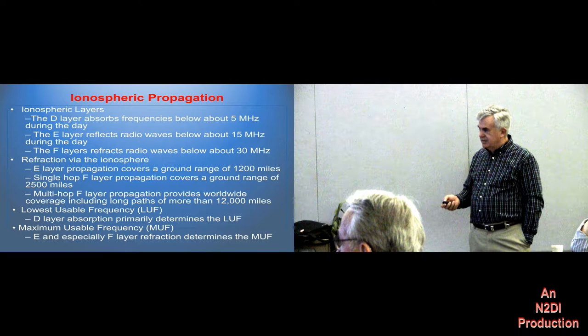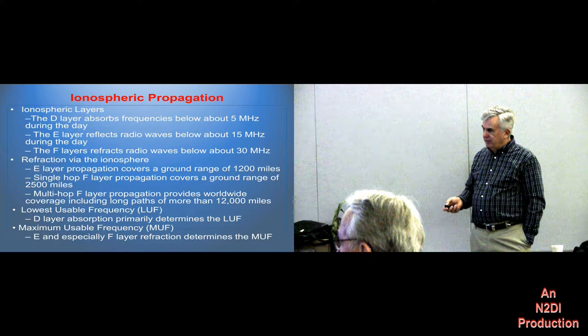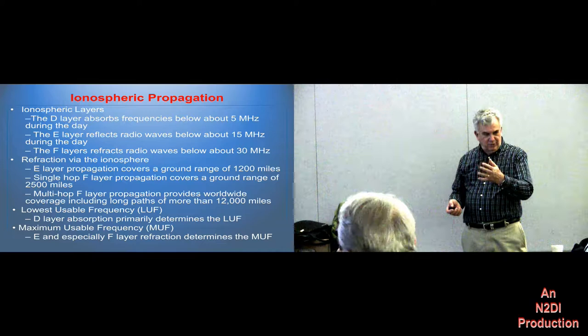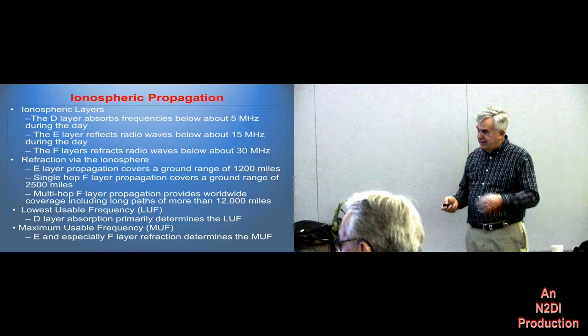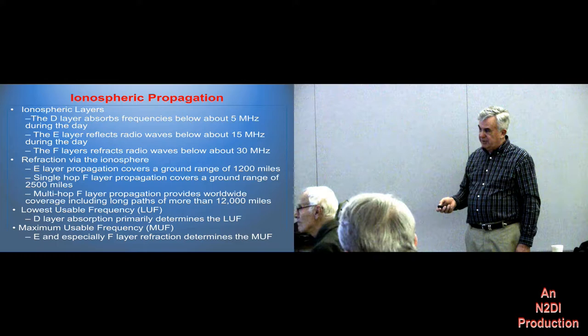Here's one concept we didn't mention before: lowest usable frequency, or LUF. We talked about maximum usable frequency. LUF is usually a result of D layer absorption. So during the daytime, the D layer is very active, and the lowest usable frequency for long-distance propagation is around 40 meters — you can't work anything on 80. At night, especially in winter, the LUF drops down below 160 meters, so you can work all over the world on a good night on 160 meters.